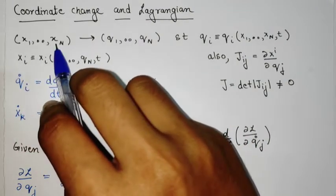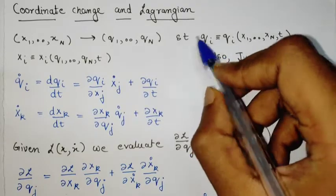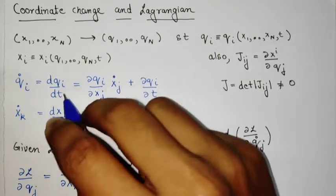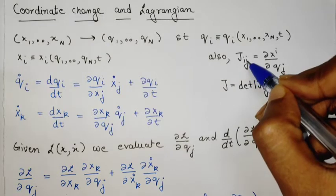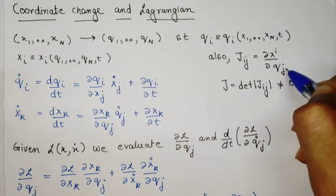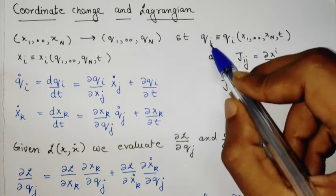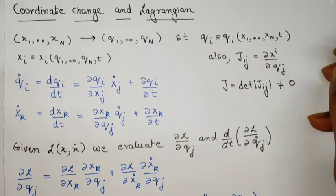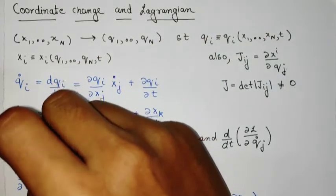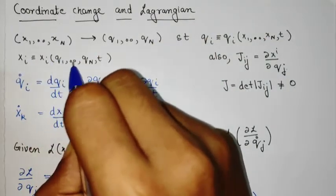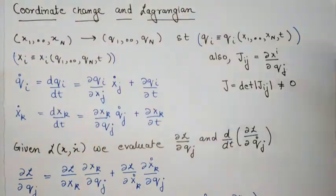We start with coordinates x1 to xn and make a transformation to a different set of coordinates q1 to qn, such that each coordinate qi is a function of x1 to xn and can also depend on time. We write the Jacobian matrix with elements ∂xi/∂qj, and if this Jacobian is non-zero, the inverse transformation exists. So we assume both the transformation and its inverse exist: each xi can be written as a function of the qi's and t, and vice versa.